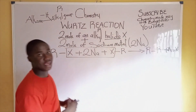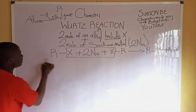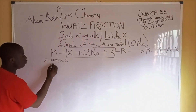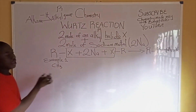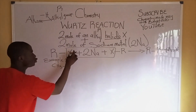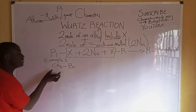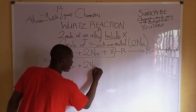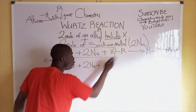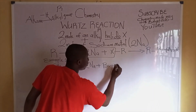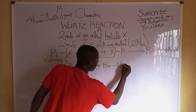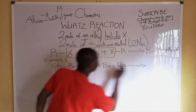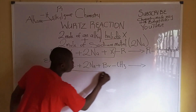Let's take an example. Let's use an alkyl group like methyl — CH3 bonded to bromine — so this is methyl bromide. It reacts with two moles of sodium metal, plus another mole of methyl bromide, which is Br bonded to CH3.